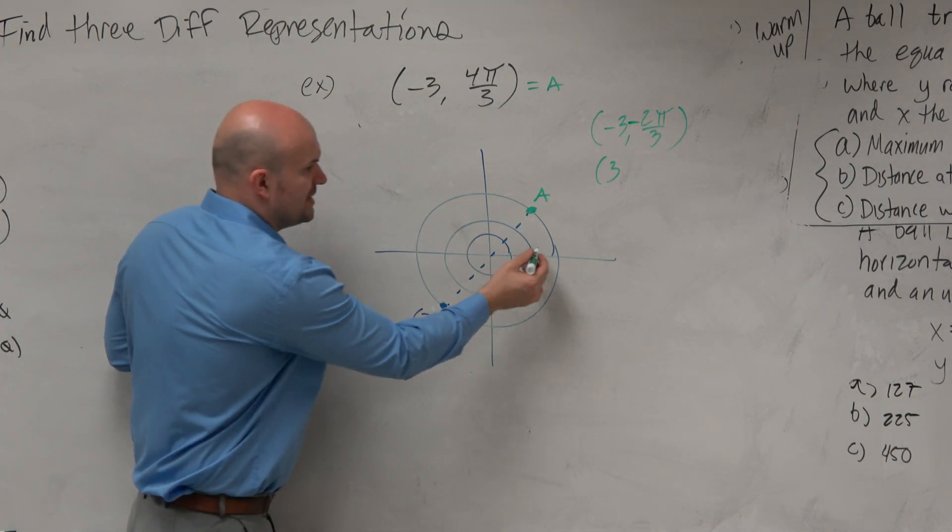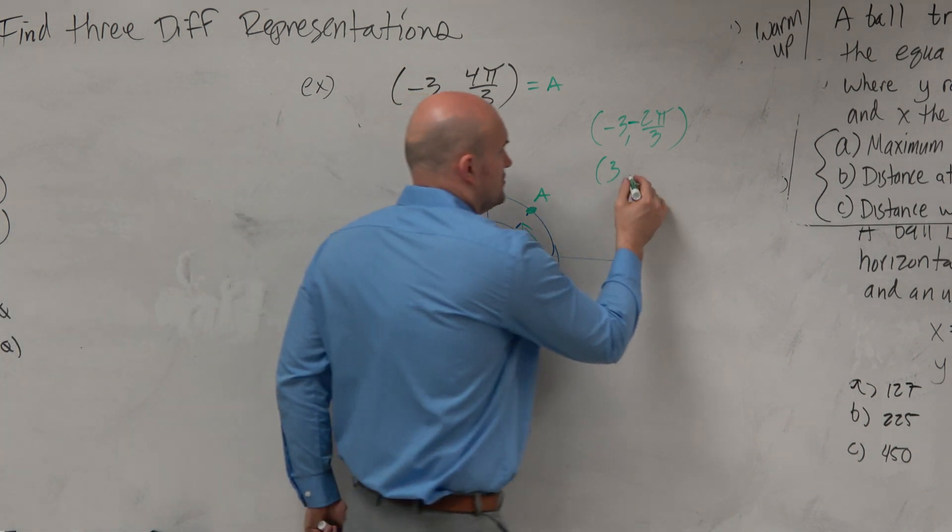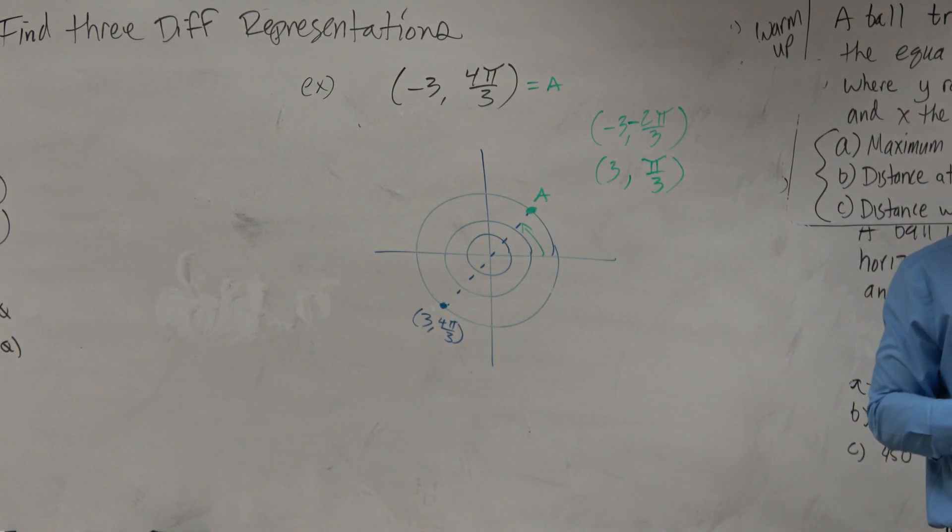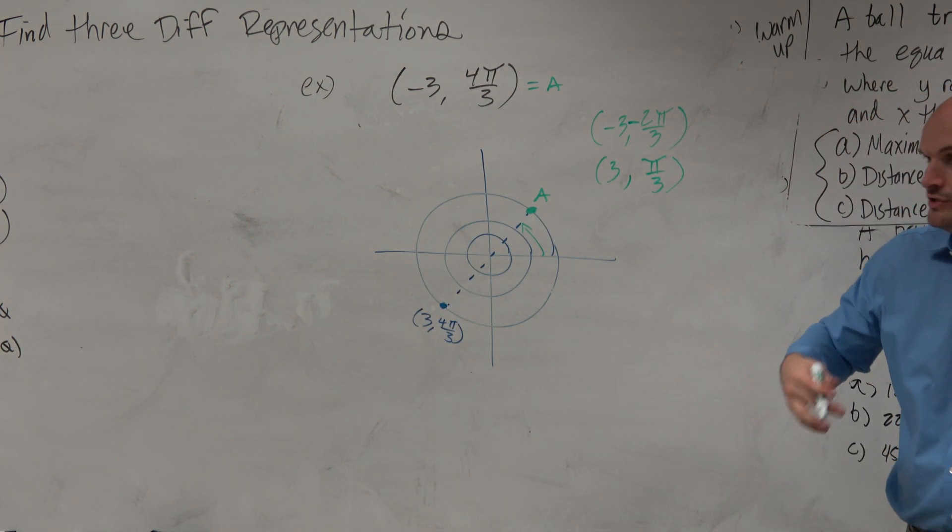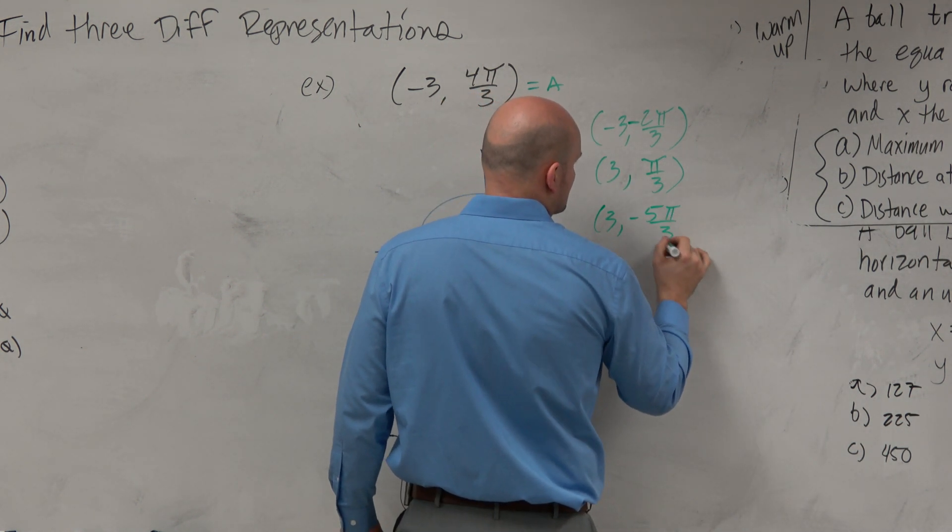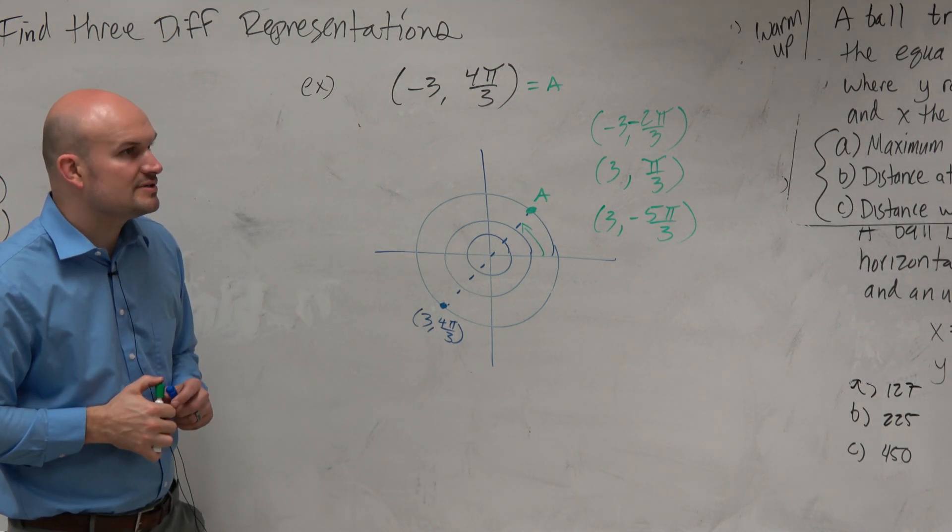What is this angle? What is it from here to here? π over 3, right? So couldn't you just do π over 3? And then what about the negative version of that? Negative 5π over 3. There's three representations right there.